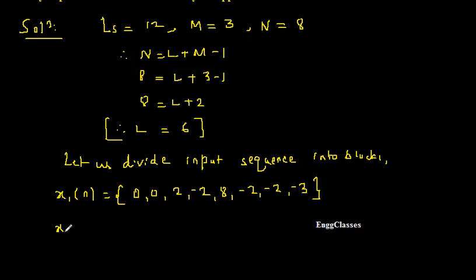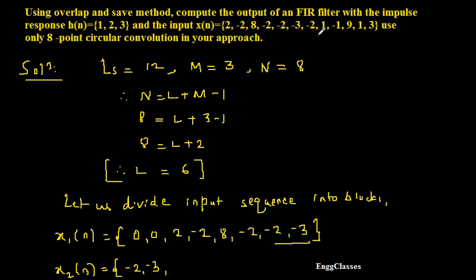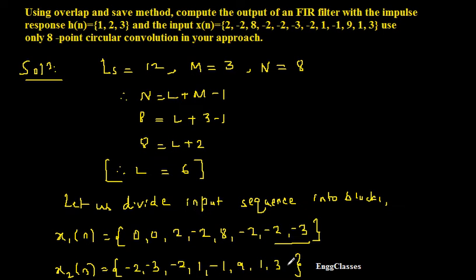Similarly, x2[n]: I will consider 2 samples from the previous block, that is minus 2 and minus 3, and 6 samples from the input x[n] starting from where we stopped. So x2[n] is: minus 2, minus 3, minus 2, 1, minus 1, 9, 1, 3.